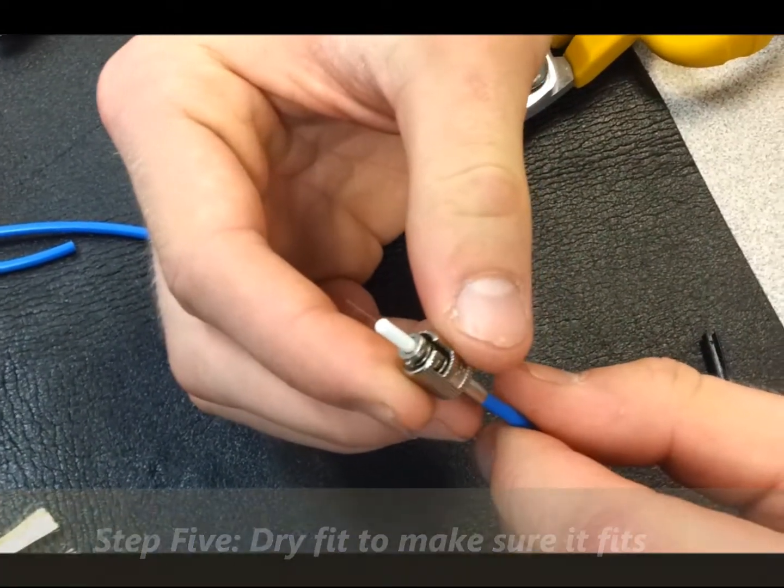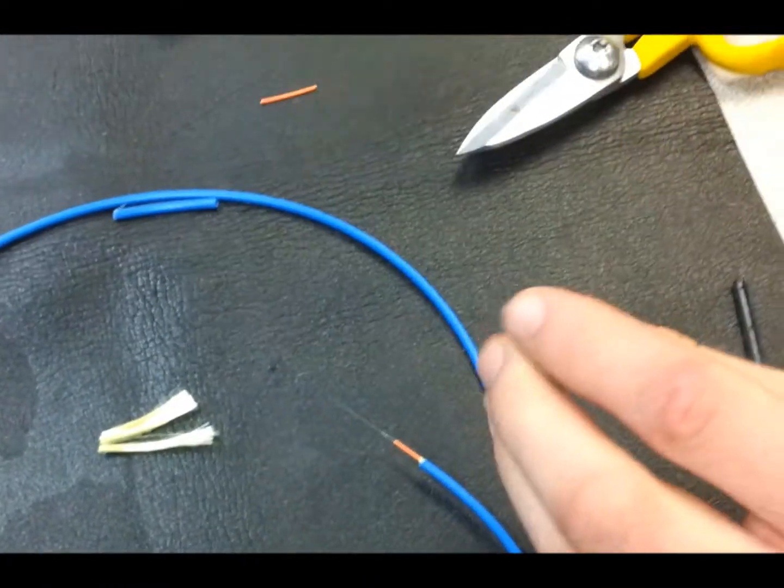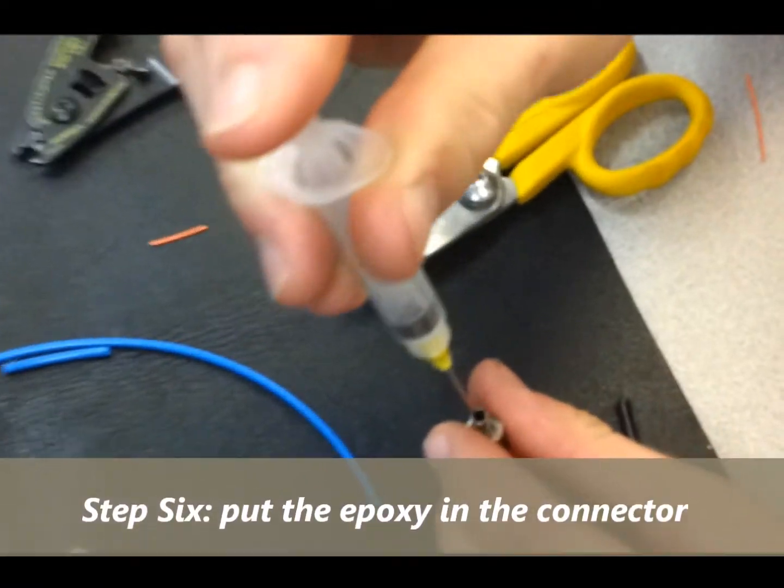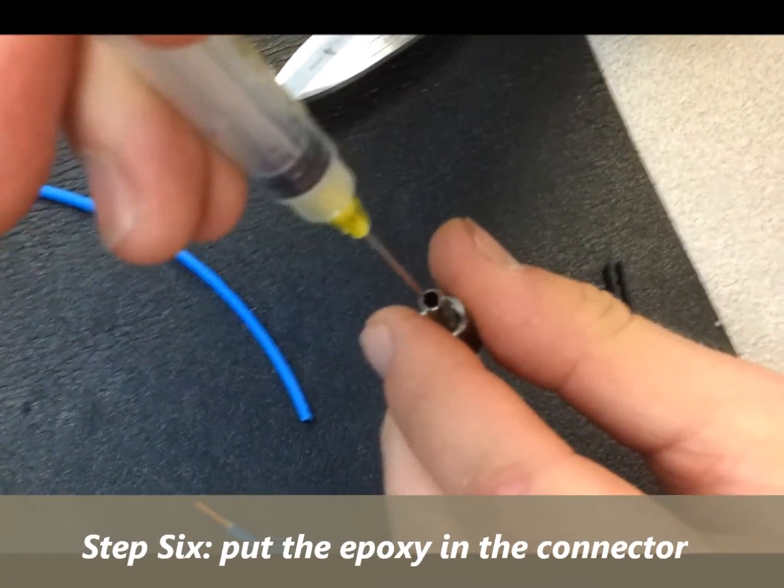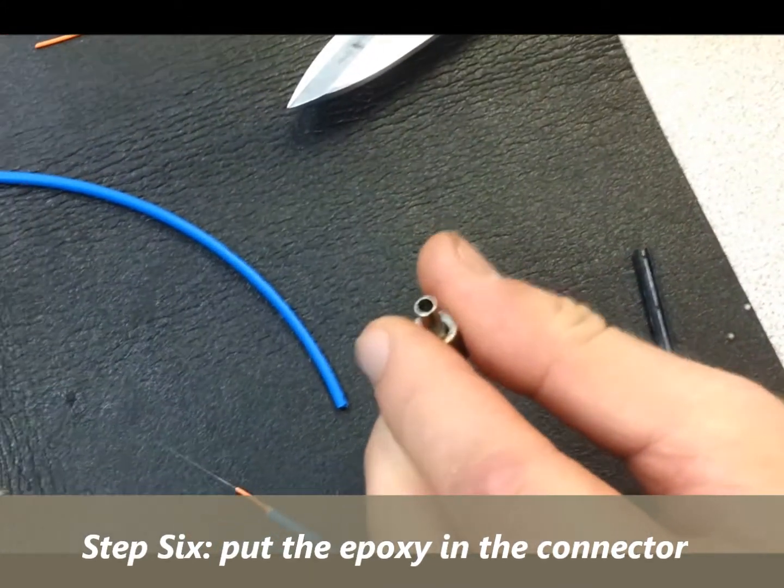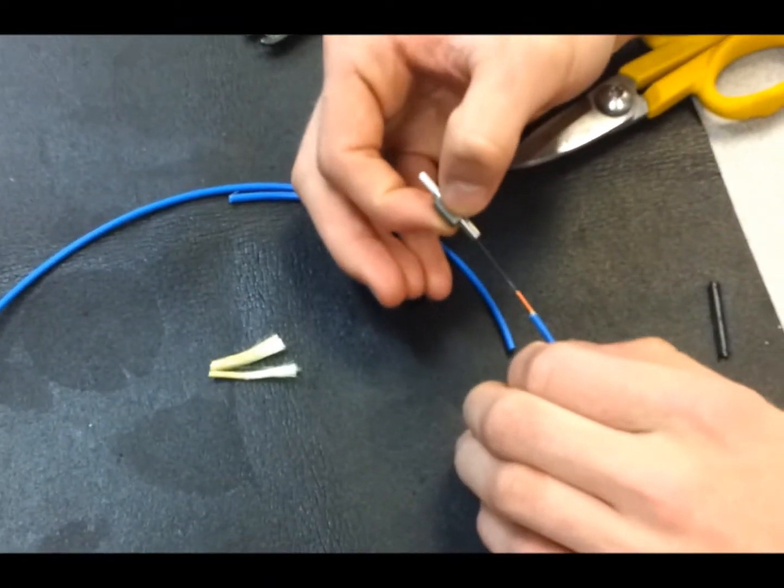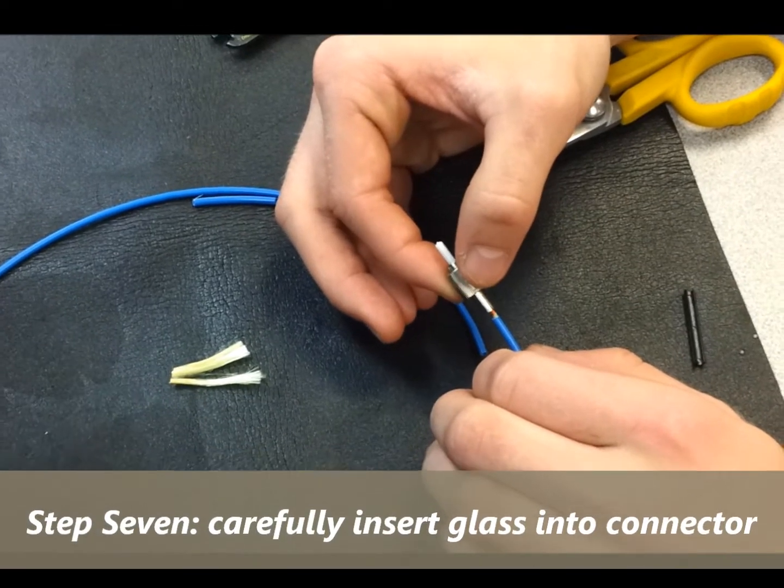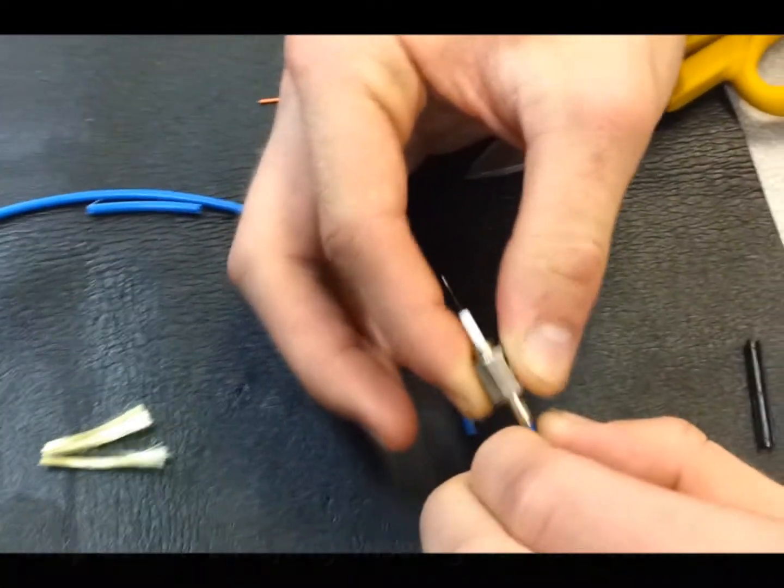Then we're going to take it back off and put the glue into the connector. We're going to put the glass into the connector, and then after inserting we're going to put it into the curing oven.